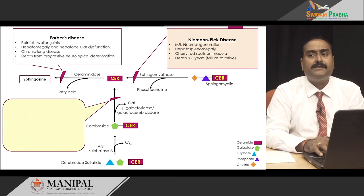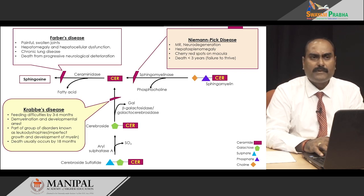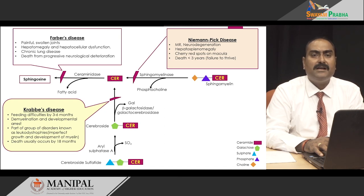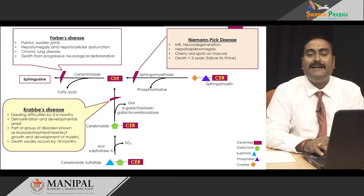If there is deficiency of the beta-galactosidase enzyme, then we get Krabbe's disease. In this case, there is feeding difficulty starting by the age of 3 to 6 months. There is profound demyelination and developmental arrest. Krabbe's disease belongs to a specific class of disorders known as leukodystrophies, where there is a problem with the formation or normal maturation of myelin. There is imperfect growth and developmental delays, and death generally occurs by 18 months of age.